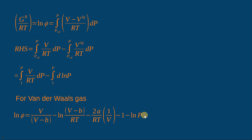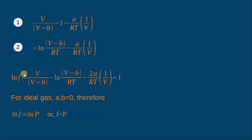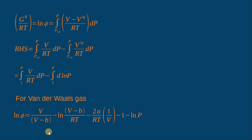This equation is just an extension of what we had derived. Putting -ln P on both sides gives back the earlier equation. For an ideal gas, ln φ = ln 1 = 0, or φ = 1; that is, for an ideal gas the fugacity coefficient is always 1.